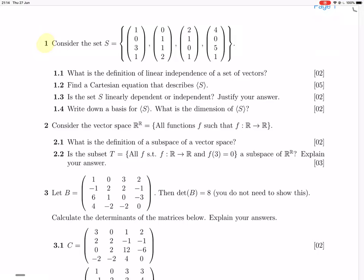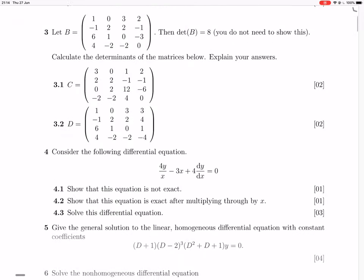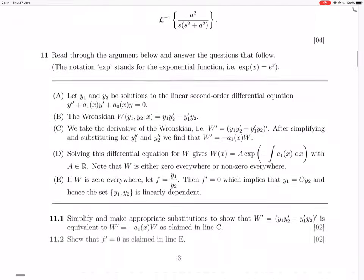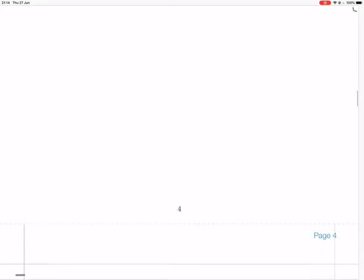Okay, so question one. They give us this set, and then they are vectors like in R4, and then they say what is the definition of linear independence of a set of vectors? So that's a general question that has nothing to do with that particular set.